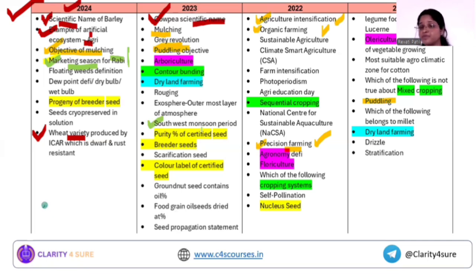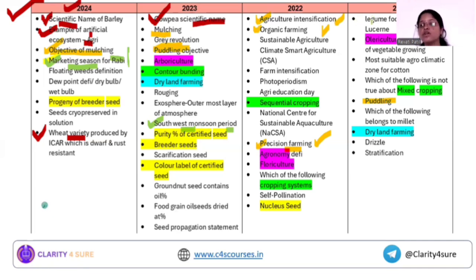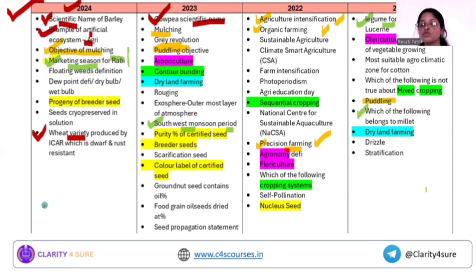Similarly, most Kharif crops are dependent on the southwest monsoon for irrigation and water requirements. We know the period for Kharif is around June-July to September-December, and the same is the period for the southwest monsoon. There are also questions on legume fodder and millets from the classification of field crops. Based on use, we classify field crops into cereals, pulses, commercial, sugar, forage — and under forage you will find legume fodder. The theme here is that there are repeated questions from the classification of field crops.